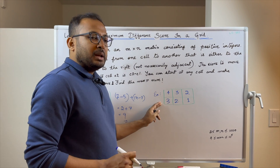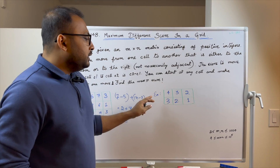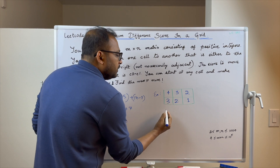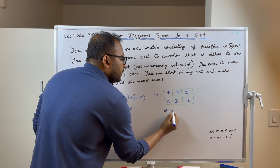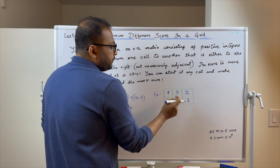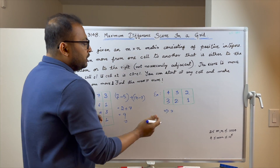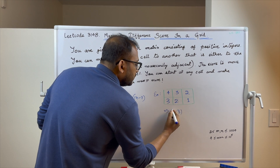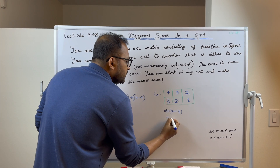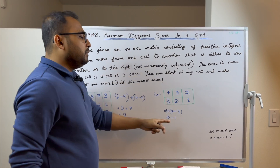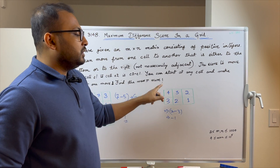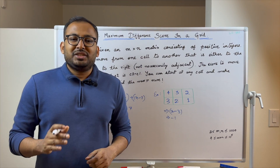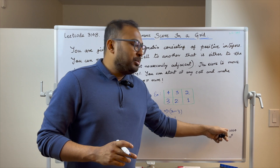In the second sample test from the problem statement, starting from a particular cell and moving to the cell to its right, the score is 2 minus 3, which equals −1. This is the maximum score achievable in this grid. The constraints state that m and n can be up to 1000.